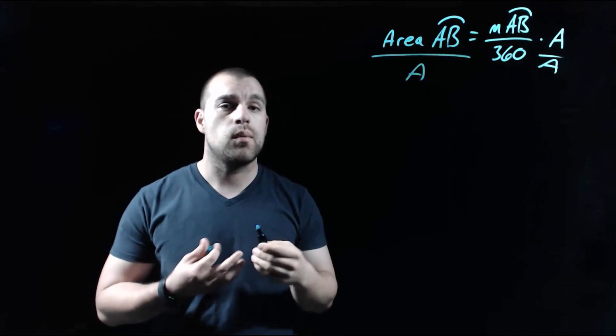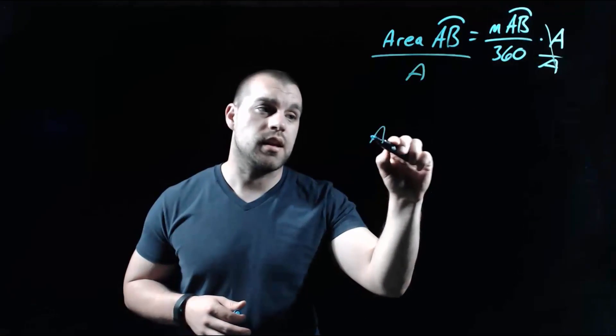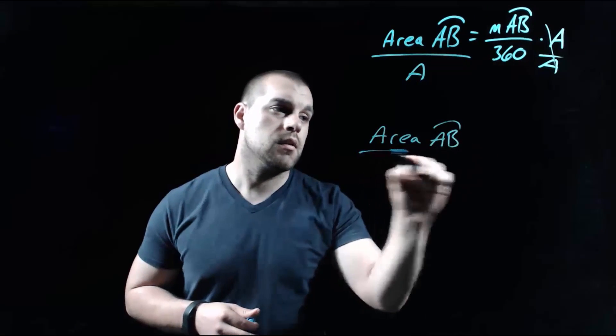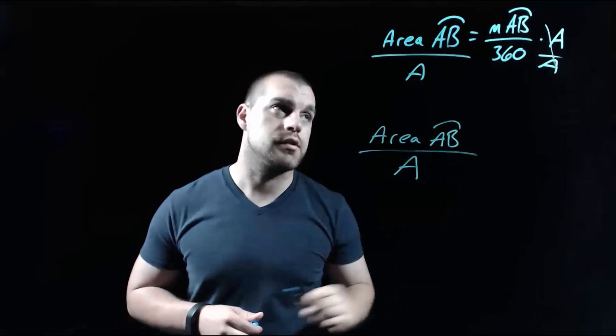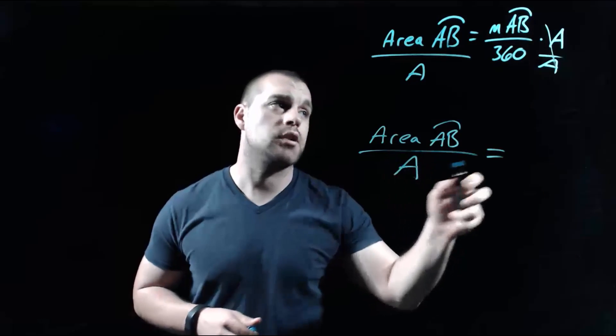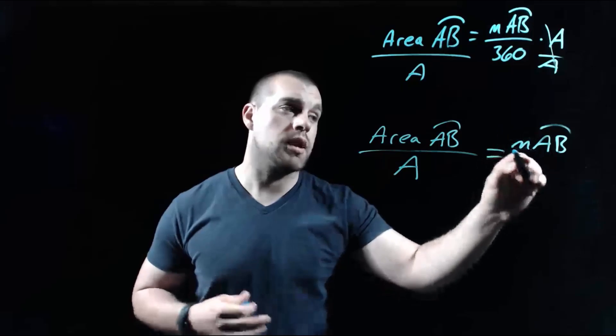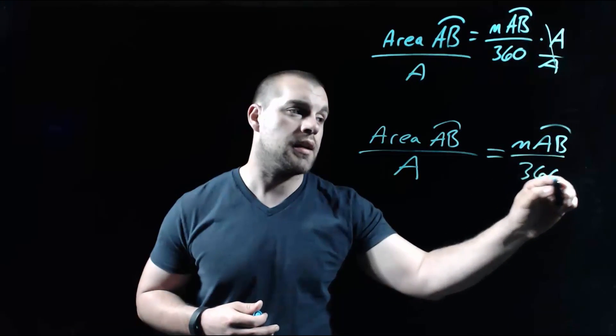and then we've got ourselves a proportional setup. So we've got the area of an arc that runs from A to B over the area of our full circle, and that fraction has to equal the measure of the arc that runs from A to B in terms of degrees over 360.